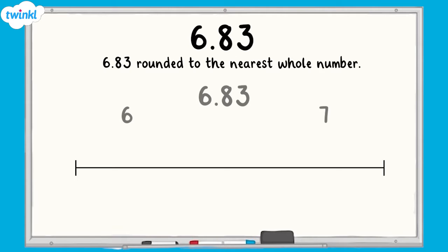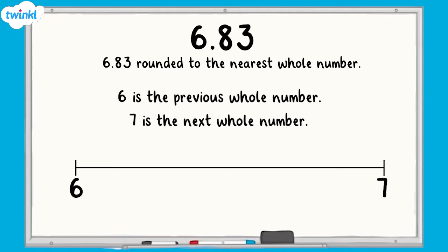6.83 is between 6 and 7. 6 is the previous whole number. 7 is the next whole number. We can also mark the midpoint to help us identify which whole number our number is closest to. The midpoint here is 6.5.